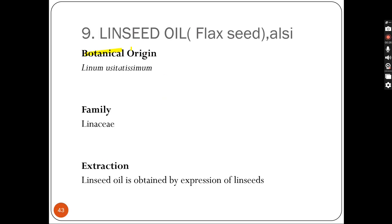Linseed oil biological source is Linum usitatissimum. This is the plant from which we obtain linseed oil. Its common name is flaxseed. The family is Linaceae. Using Linum usitatissimum, we extract this oil by the process of the expression method. Expression is the method in which we apply pressure on the seeds to obtain the oil.